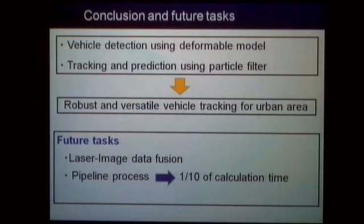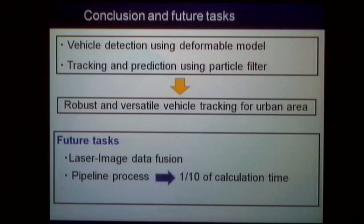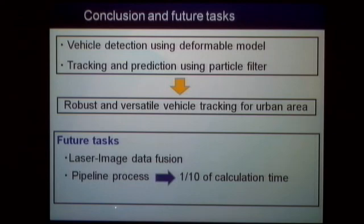In conclusion, vehicle detection using the deformable object model and tracking with the particle filter provides robust and versatile tracking for urban areas. Future tasks include laser-image fusion, and reducing calculation time by one-tenth through software optimization. Of course, using dedicated hardware could reduce the computation time drastically.